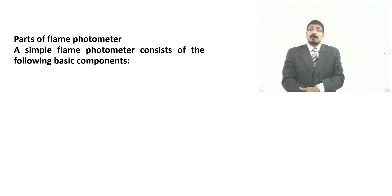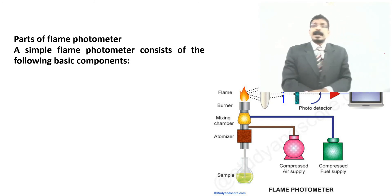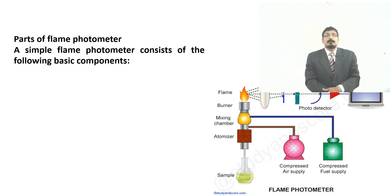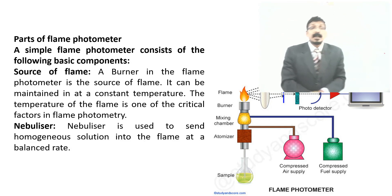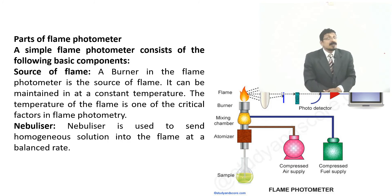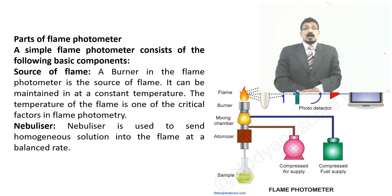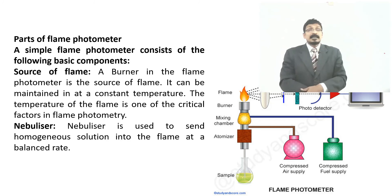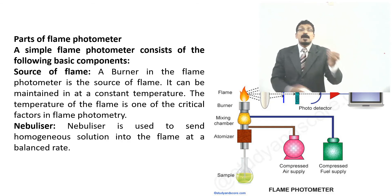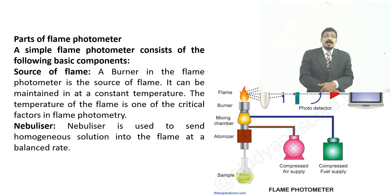A nebulizer takes the sample through a capillary tube; compressed air through the nebulizer sprays a homogeneous solution into the flame at a balanced rate. The optical system — the detector system — consists of a convex lens and a mirror. The mirror transmits light emitted from the atom, whether sodium or potassium, and helps focus the emission to the lens. The lens then focuses the light to the slit.